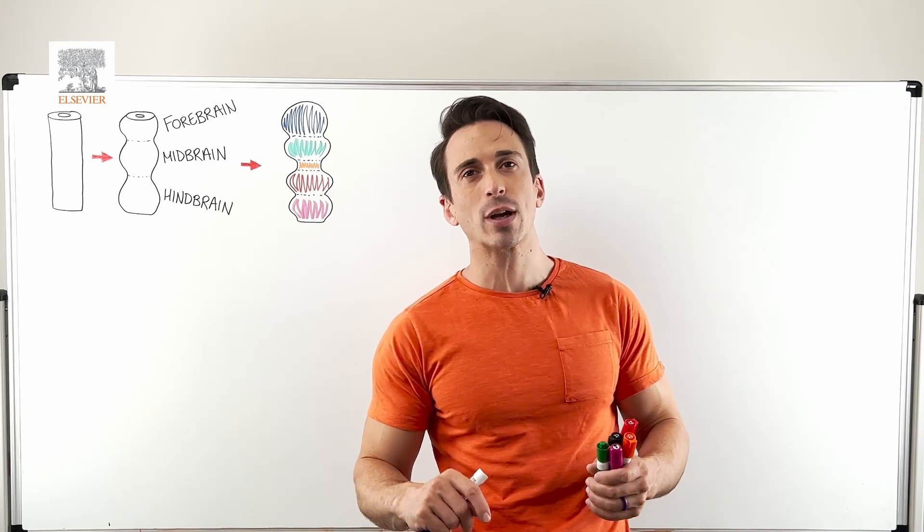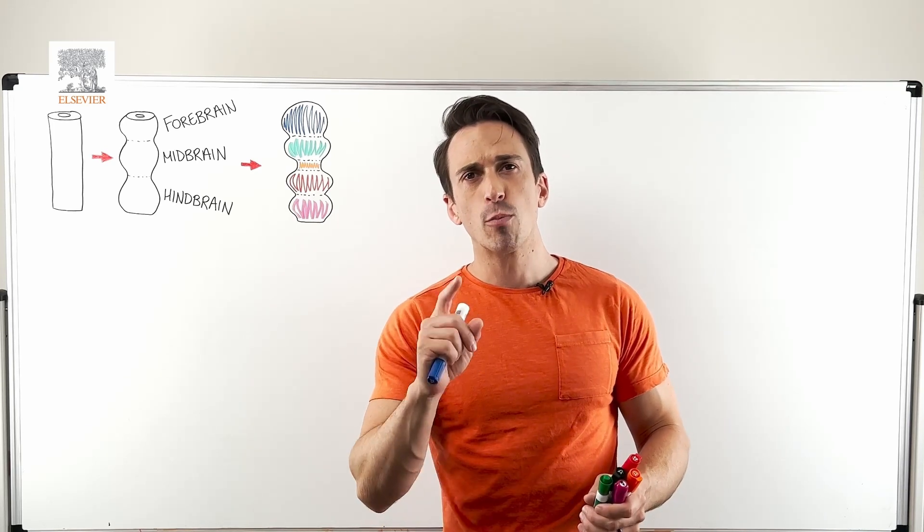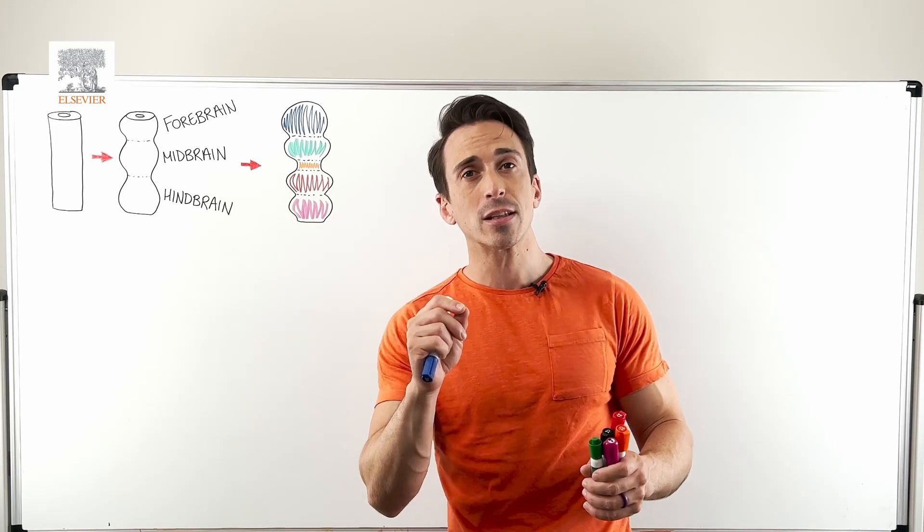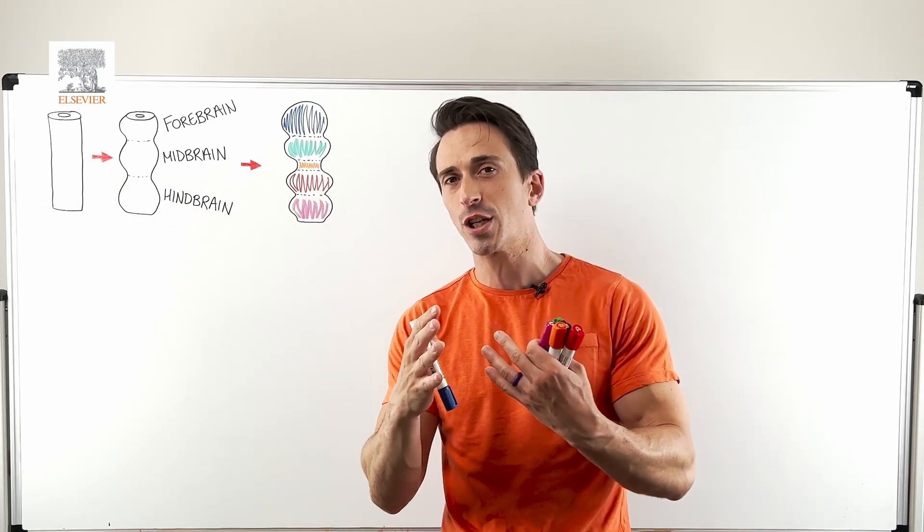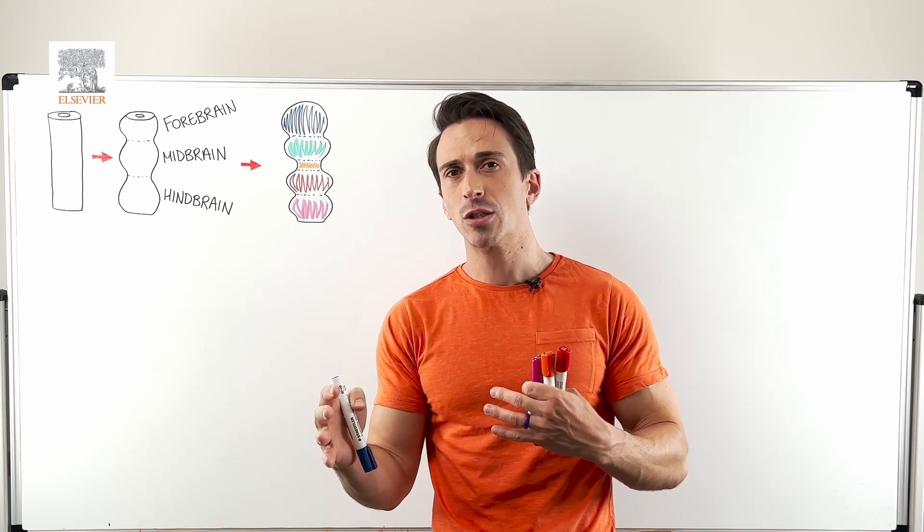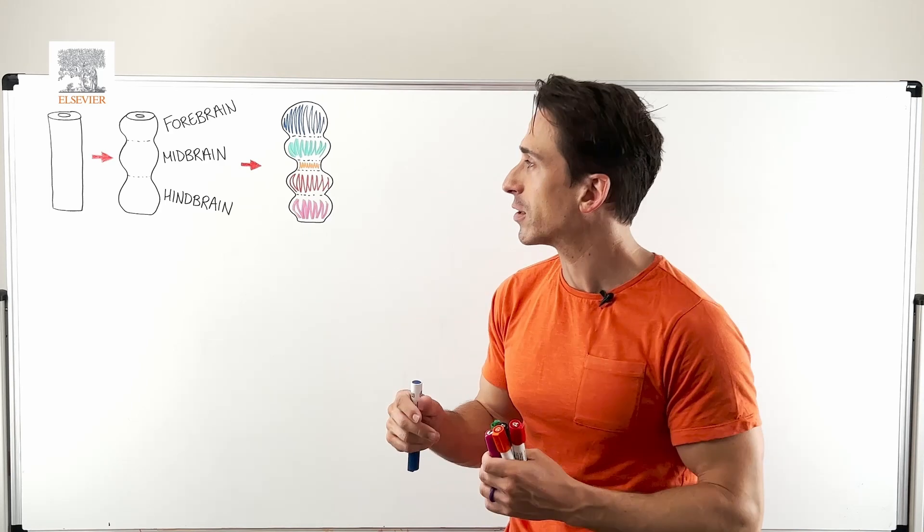In this video, we're taking a look at structures of the brain. Did you know that your brain, brainstem and spinal cord began its life as a hollow tube called the neural tube? And throughout a couple of weeks of gestation, this tube begins to form some protrusions, some swellings called vesicles.